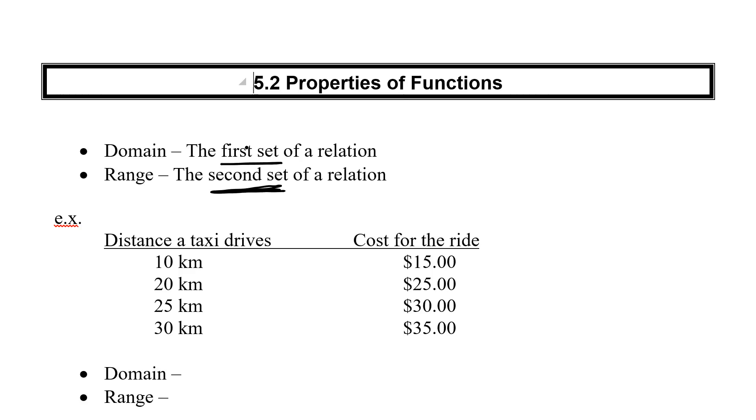Here we have an example of the distance a taxi drives and the cost for the ride. We've got 10km, 20km, 25, and 30km, and we've got $15, $25, $30, and $35 in set 2. The domain is the first set. From yesterday, the first set always goes in the first column. So my domain is 10km, 20km, 25km, and 30km.